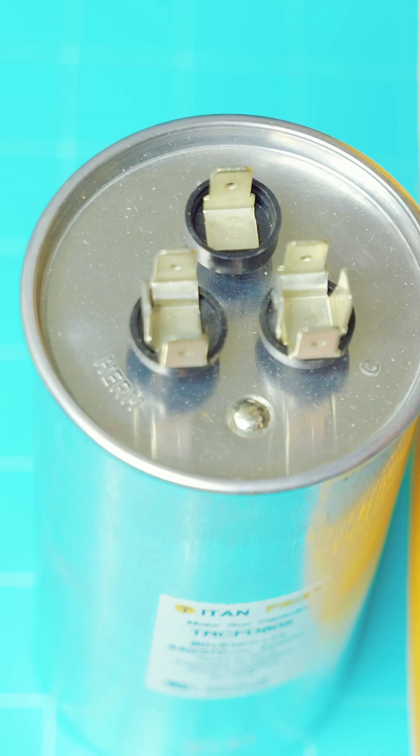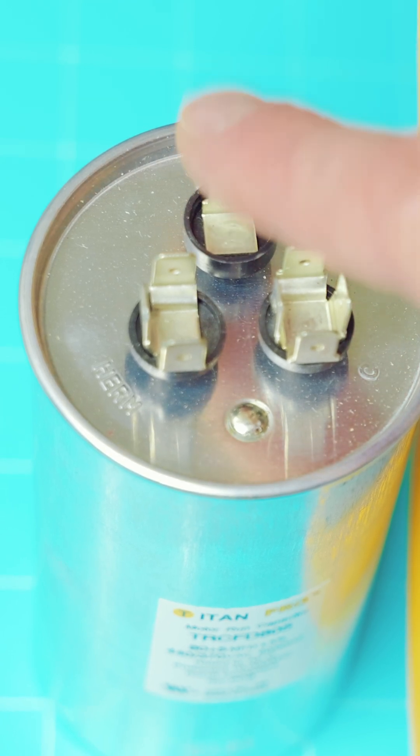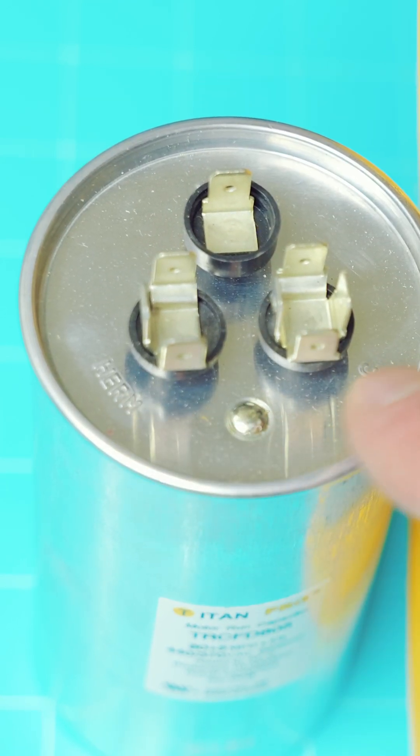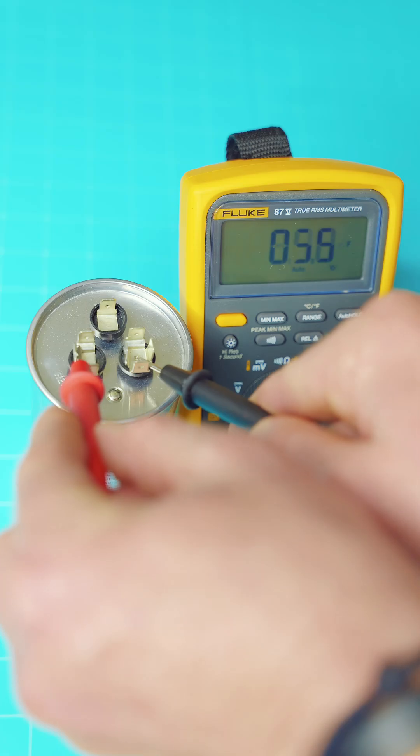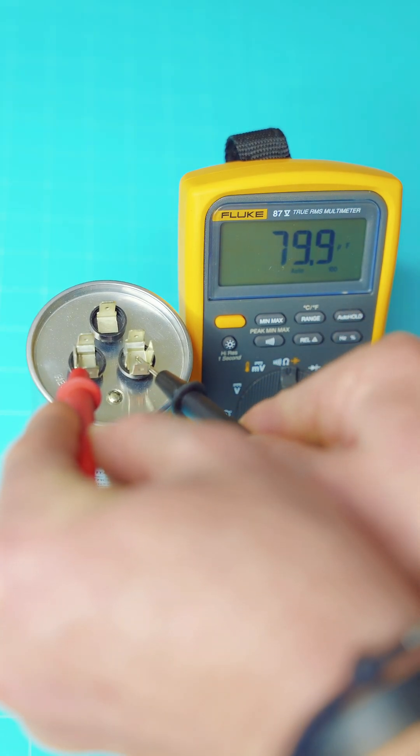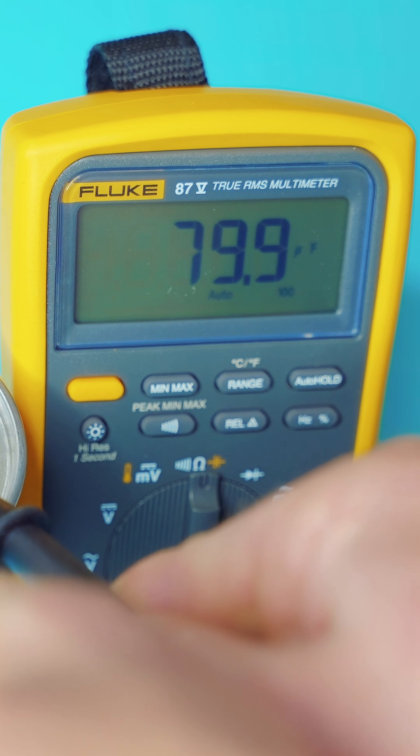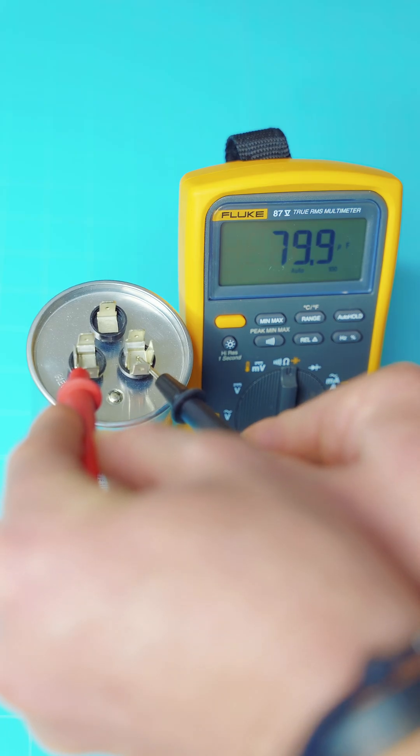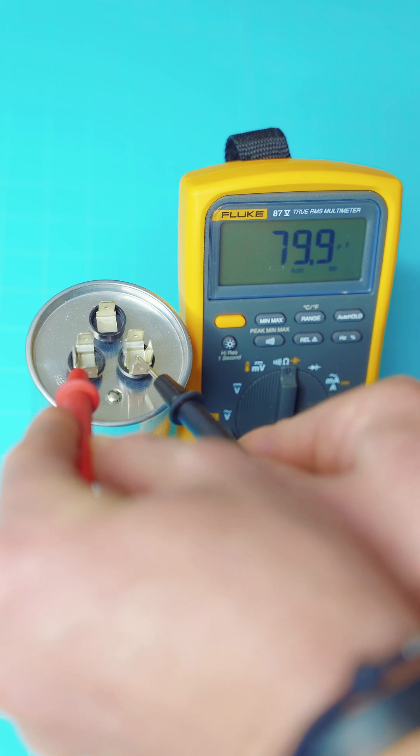On a three terminal like this, you're probably going to have one that says fan. Don't worry about that one. You're going to want to go across the Herm over to the C. Just touch the metal contacts. And as you can see, I'm getting 79.9, which is definitely within that 5% tolerance. So this capacitor is good.